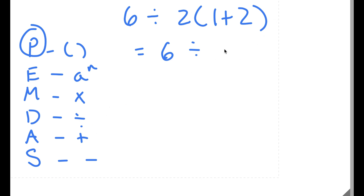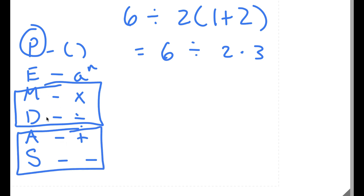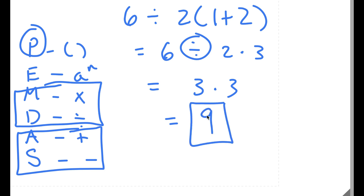Now there are no parentheses or exponents, so we go down to multiplication and division. These two are actually in the same tier, and the same goes for addition and subtraction. Whichever one comes first going left to right is the one you start with. Here, going left to right, division comes first. So 6 divided by 2 equals 3, and now I have 3 times 3. 3 times 3 is 9, so 9 is our answer.